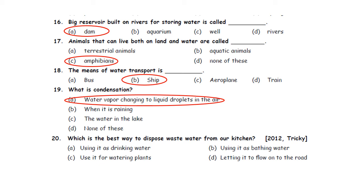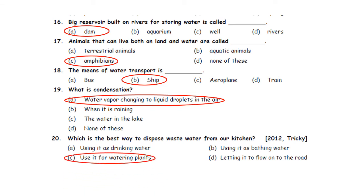Question twenty: Which is the best way to dispose waste water from our kitchen? A. Using it as drinking water. B. Using it as bathing water. C. Using it for watering plants. D. Letting it flow onto the road. The best way to dispose kitchen waste water is to use it for watering plants. So option C is the correct answer.